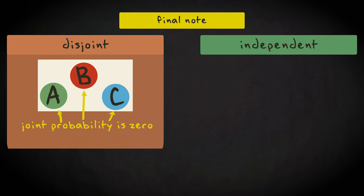And as a consequence, disjoint events are very dependent. Once one event occurs, you know that the probability of the others is zero.